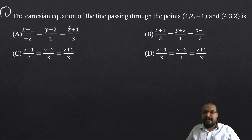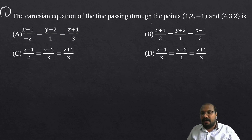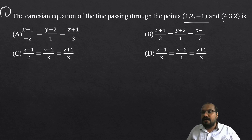Question number one: The Cartesian equation of the line passing through the points (1, 2, -1) and (4, 3, 2).